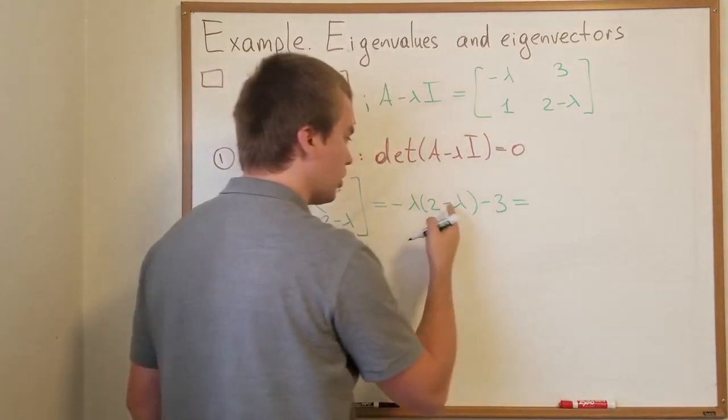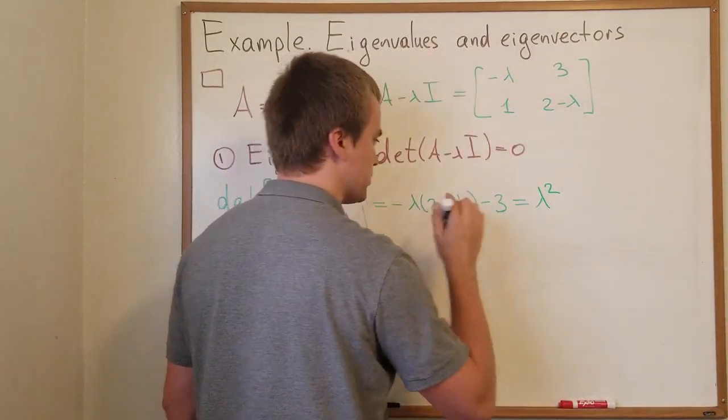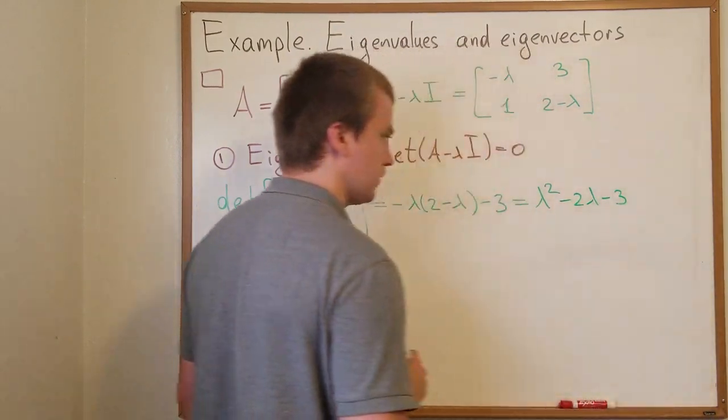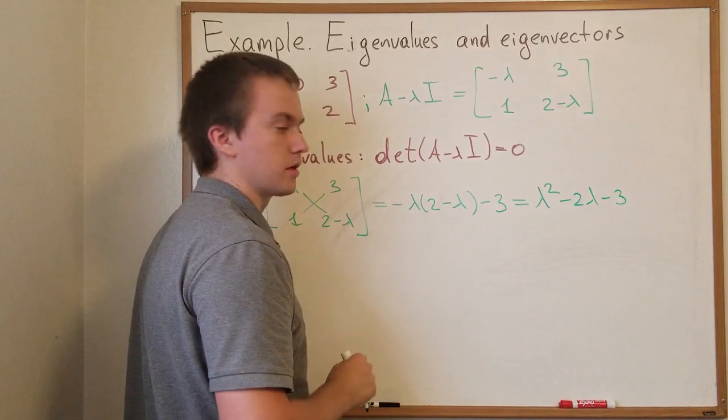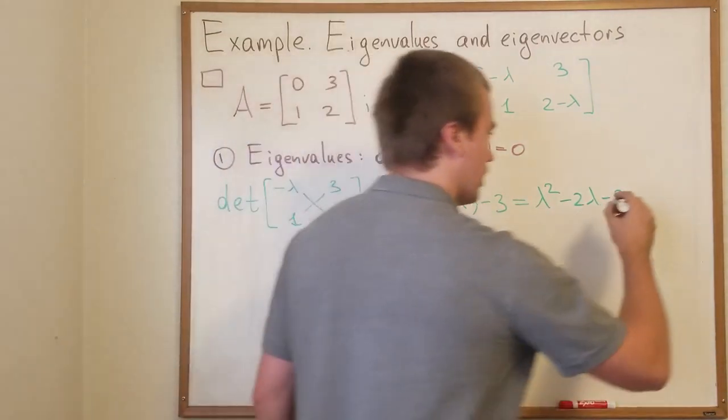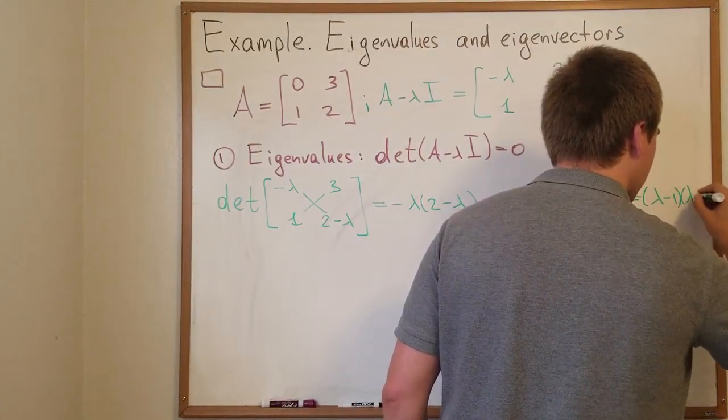And what polynomial we get? We get quadratic polynomial. So in this case I have lambda square minus 2 lambda minus 3. And what are the roots of this quadratic polynomial? We can see that we can factor that lambda minus 1 times lambda minus 3.